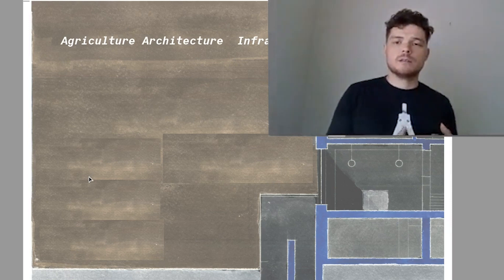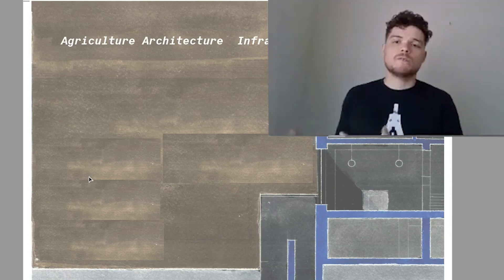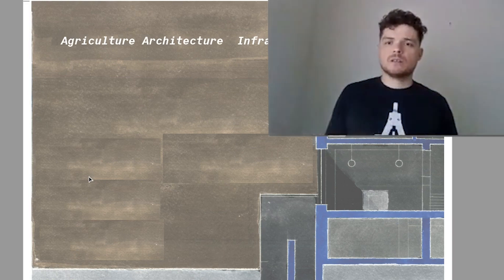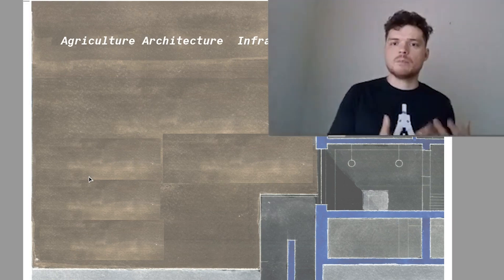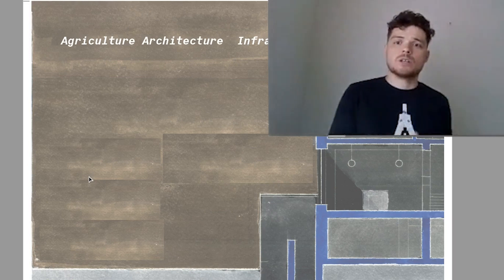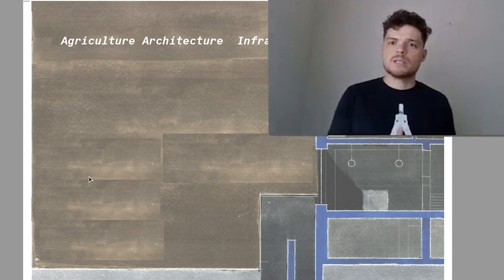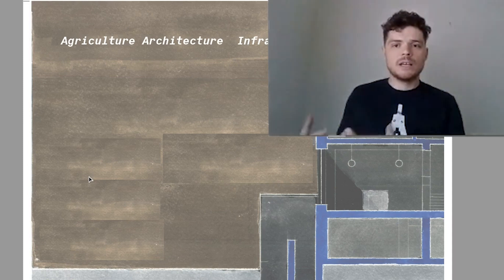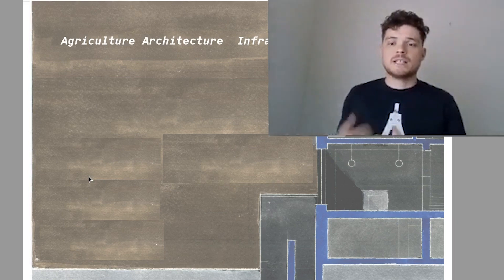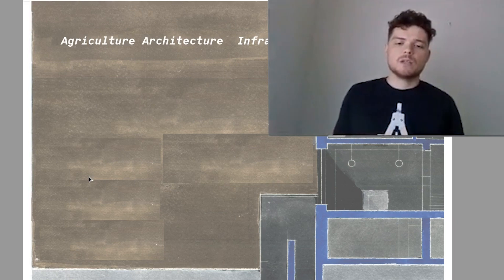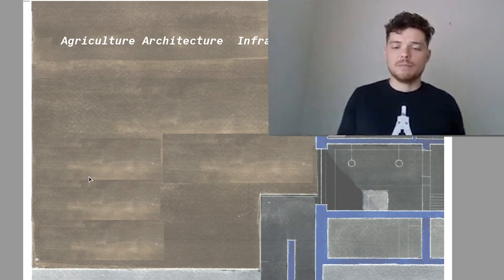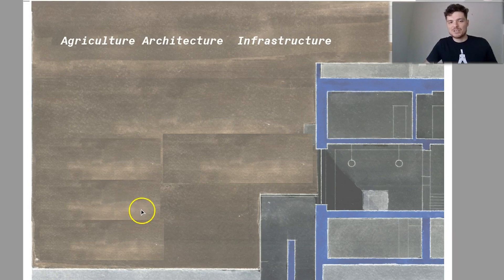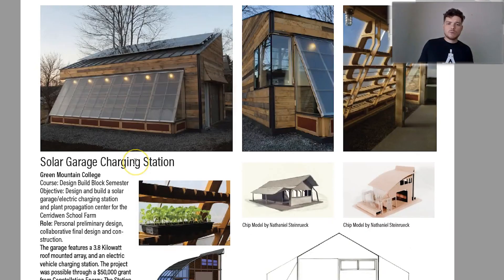Infrastructure doesn't necessarily mean physical infrastructure — it is also social infrastructure, and oftentimes there is physical infrastructure that supports social infrastructure. An easy example is the Plant Chicago: they have a physical location and infrastructure for supporting an agriculture system, but then they have the social infrastructure of education programs, farmers markets, and activities that happen within that physical infrastructure. We always want to look at how the built environment supports the social environment and integrates with the natural environment.